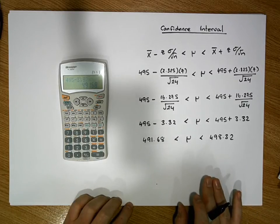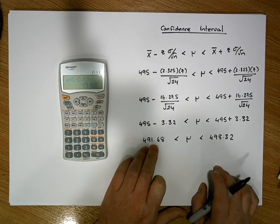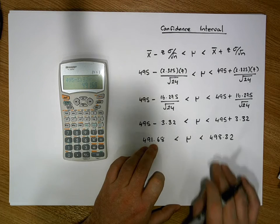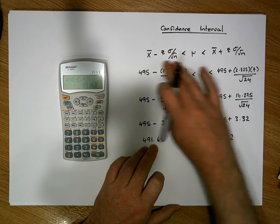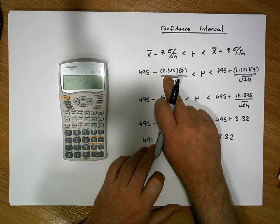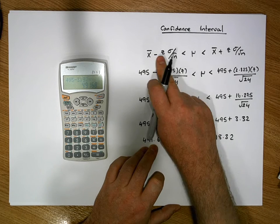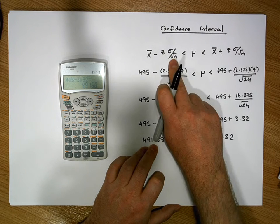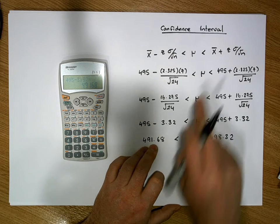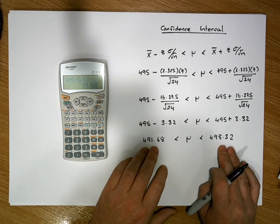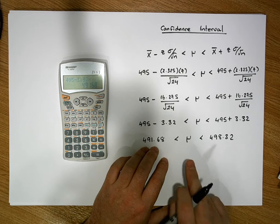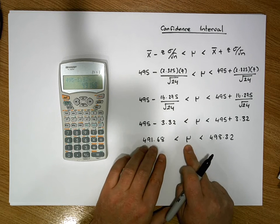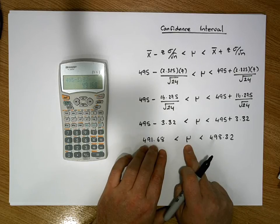495 minus 3.32 gives us 491.68, which must be less than mu, which must be less than 498.32. So what we've constructed here, based on our sample evidence, is a lower bound and an upper bound. This interval was constructed based off 2.325 standard units on either side of the mean with respect to the standard error for this distribution.